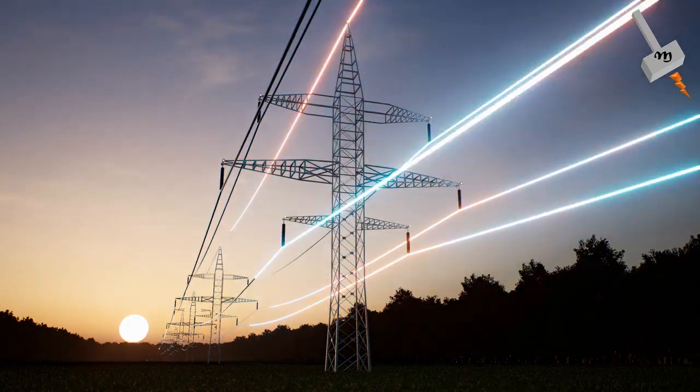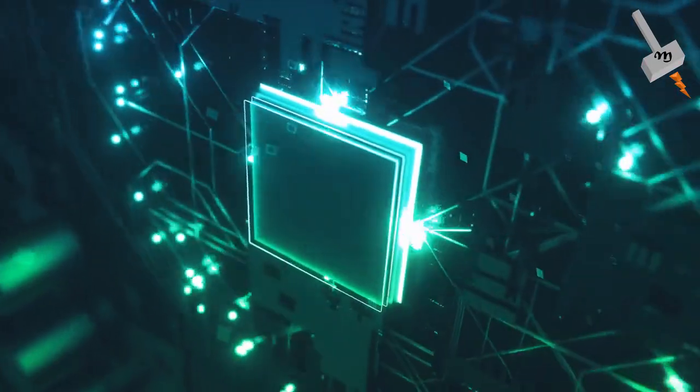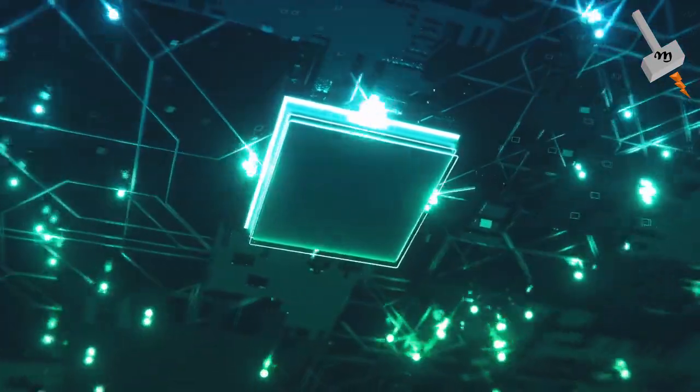Electric current is the flow of electric charge through a conductor, such as a wire. It is the movement of electrons or other charged particles from one point to another.